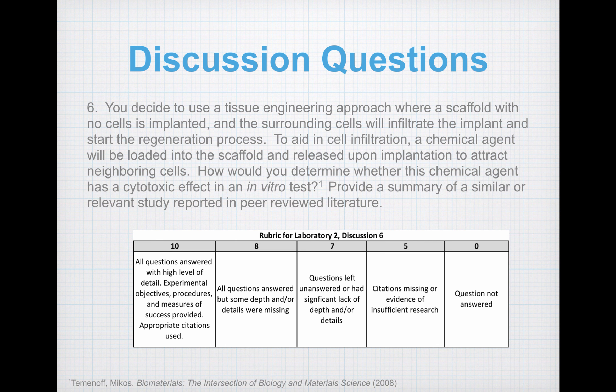For the sixth and final question, consider a tissue engineering approach where a scaffold with no cells is implanted and surrounding cells will infiltrate the implant to start the regeneration process. A chemical agent will be loaded into the scaffold and released upon implantation to attract neighboring cells. How would you determine whether this chemical agent has a cytotoxic effect in an in vitro test? Provide a summary of a similar or relevant study reported in the peer-reviewed literature. Your rubric for question six is shown.